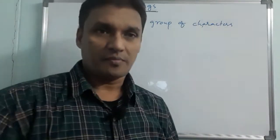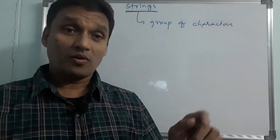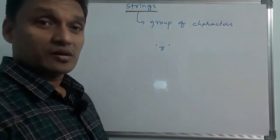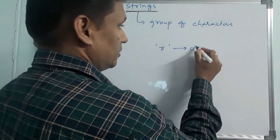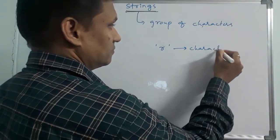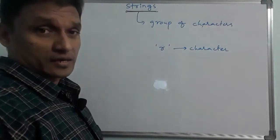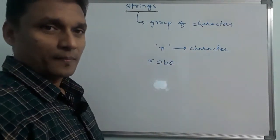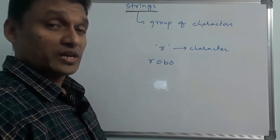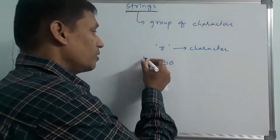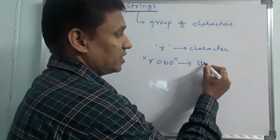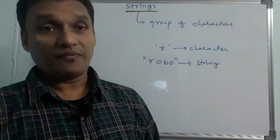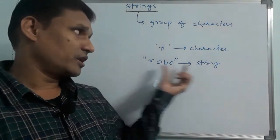A string is nothing but characters enclosed in double quotation marks. If we have a collection of characters, we have a string. String is nothing but fixed — with double quotation marks we have a string.